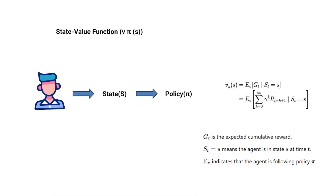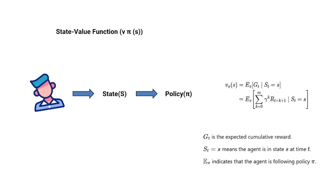The state value function evaluates how good it is for the agent to be in a specific state, given that it is following a particular policy. The agent starts at state S and follows its policy from that point onward. The state value function tells the agent the expected return — or total reward — it can achieve starting from S. Mathematically, we represent it as V-π(S). In short, this gives us the value of a state under a specific policy.